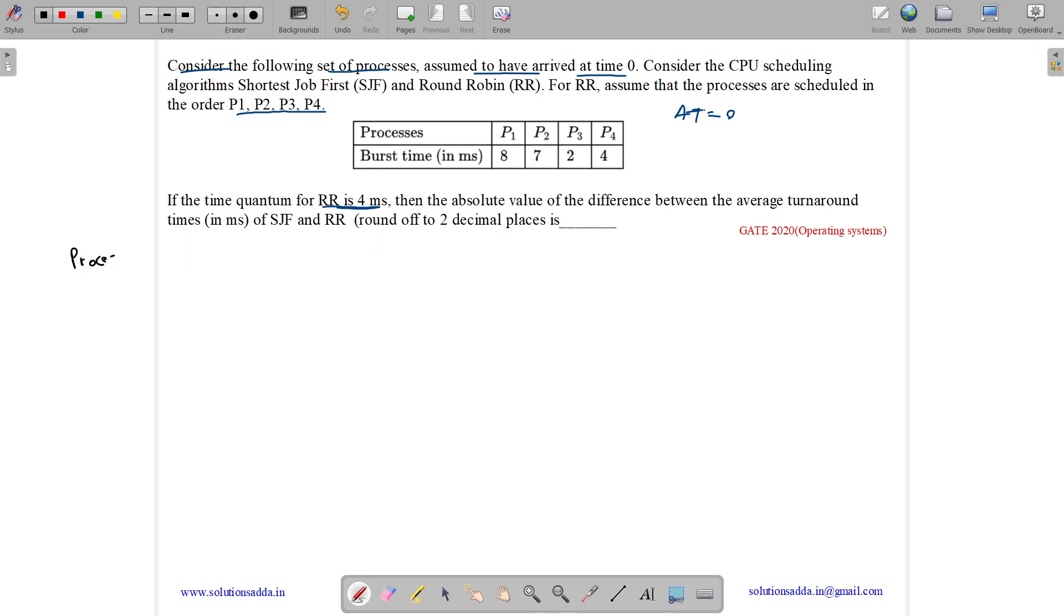So what is the process? We have process IDs: P1, P2, P3, P4. We have arrival times for all the processes as zeros.